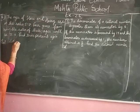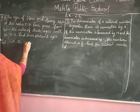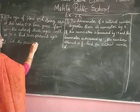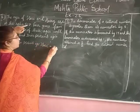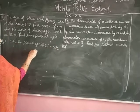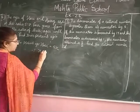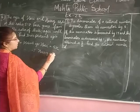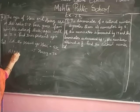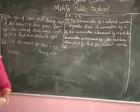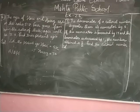Let the present age of Hari be equal to 5x and the present age of Harry be equal to 7x. According to the question condition, after 4 years the ratio of their ages will be 3:4.